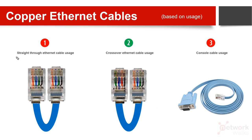A straight-through cable has all its internal wires mapped one-to-one. The RJ45 connector has eight internal cables. Pin one on one side maps to pin one on the other side, pin two to pin two, pin three to pin three, and so on. The colors match straight across — for example, half-orange maps to half-orange, full-orange to full-orange, half-green to half-green. This one-to-one mapping is what makes it a 'straight-through' cable.